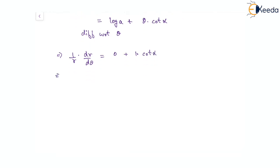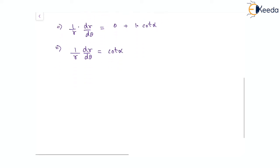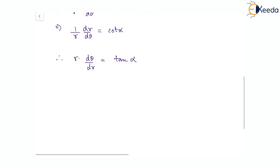That means we have got 1/r · dr/dθ equal to cot α, or otherwise we can say the reverse of this, that r·dθ/dr will be simply tan α. So with this we can see that the angle given by tan φ equal to r·dθ/dr actually becomes tan α.